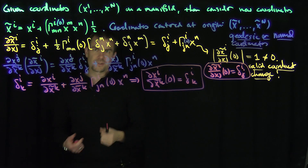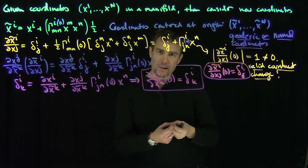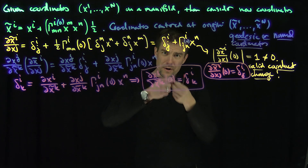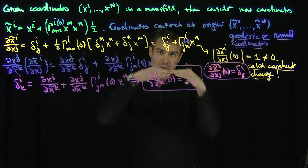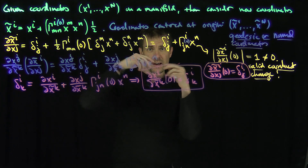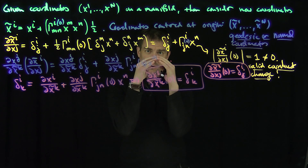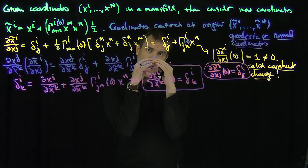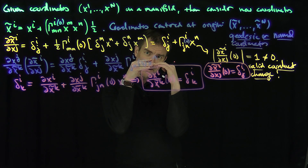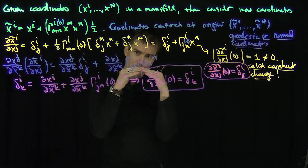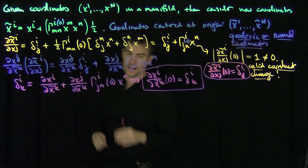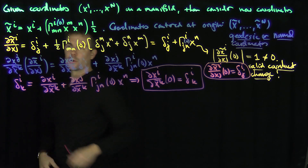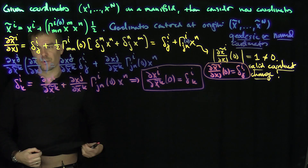In some sense, this is what the coordinate transformation is doing: it takes whatever curvature exists at point zero and locally flattens it out there. I'm essentially pushing down the curvature to be zero at that point. That's essentially what these normal coordinates are doing.